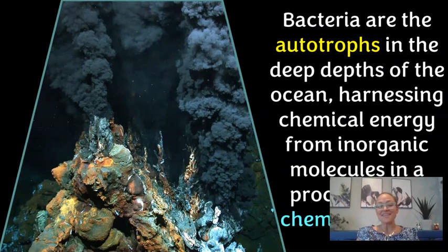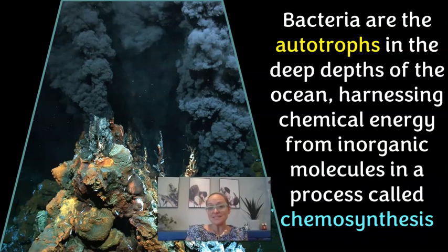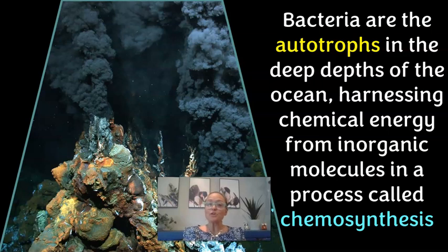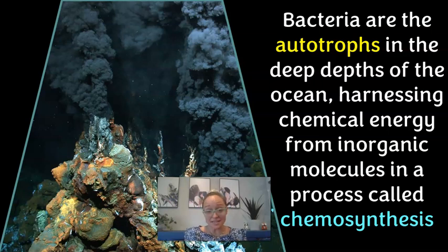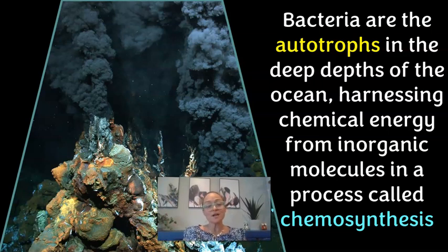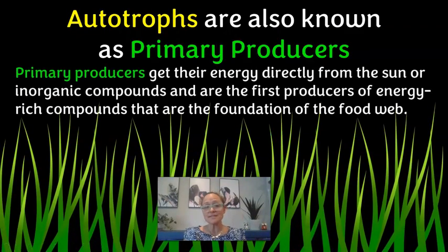There is a second type of autotroph that carries out chemosynthesis. In the deep dark depths of the ocean, miles below the surface where light does not reach, there are areas called hydrothermal vents where gases are released from the interior of the earth. Those gases contain primarily sulfide-based chemicals, and bacteria there can capture energy from those chemicals — instead of sunlight — to build energy-rich carbohydrates.